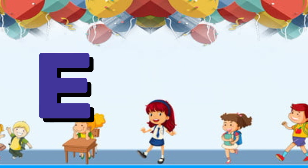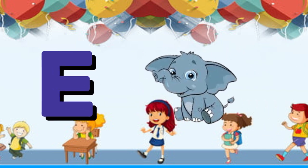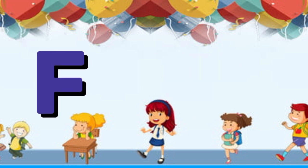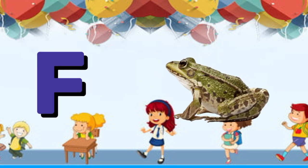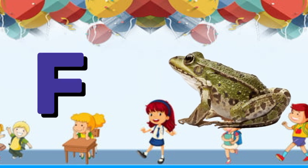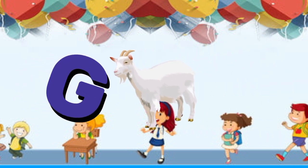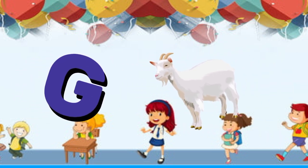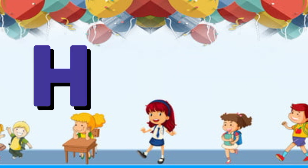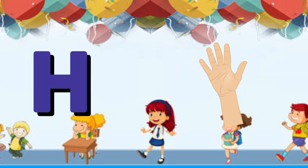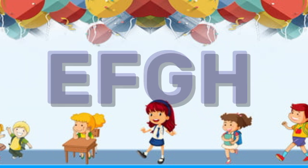E is for elephant, e-e-elephant. F is for frog, f-f-frog. G is for goat, g-g-goat. H is for hand, h-h-hand.